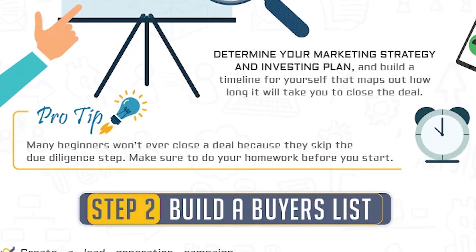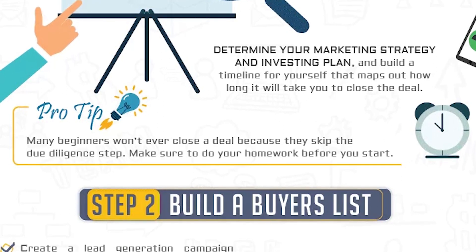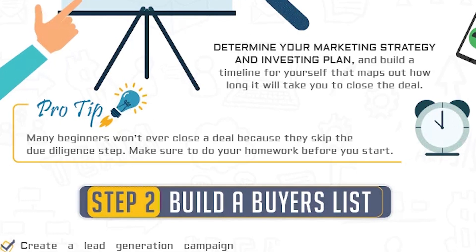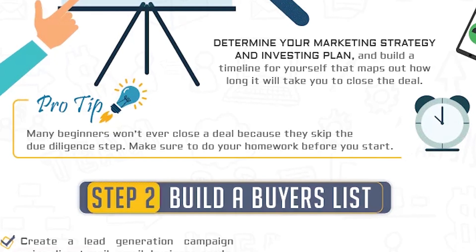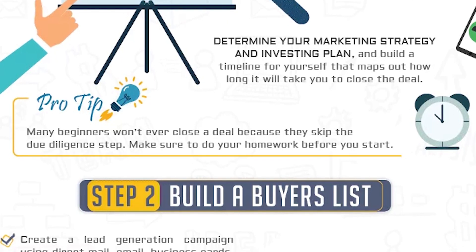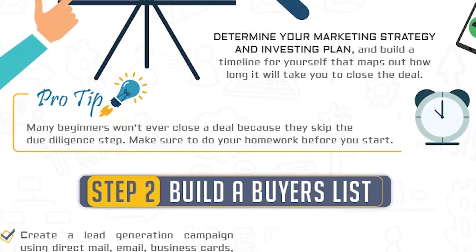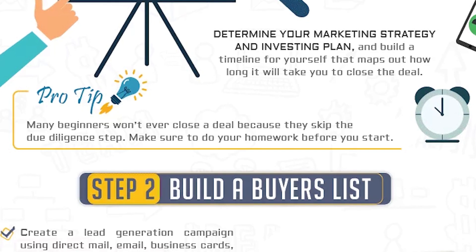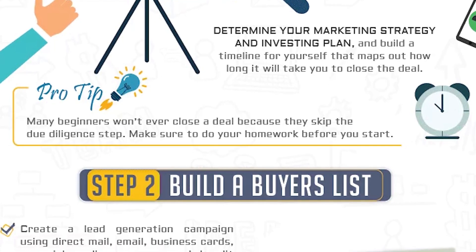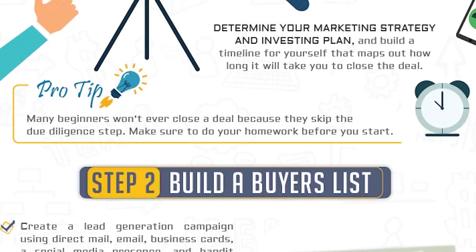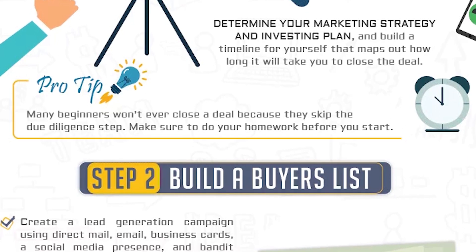When looking for places to buy, it's a good idea to use real estate websites where the owner is motivated and posts their own properties. You can find extremely motivated sellers and their distressed properties on Craigslist, FSBO, or homesbyowner.com. Consider using keywords to narrow down your search, as they will show you the most motivated sellers and therefore the best deals.